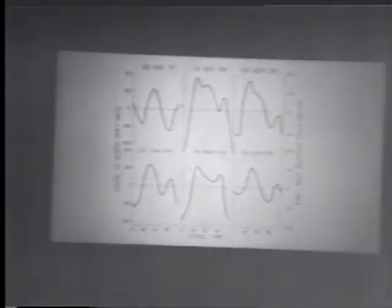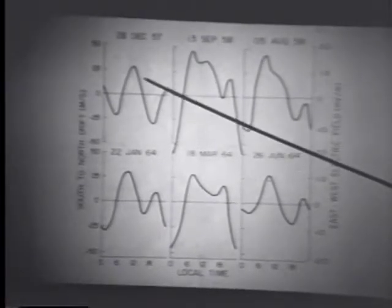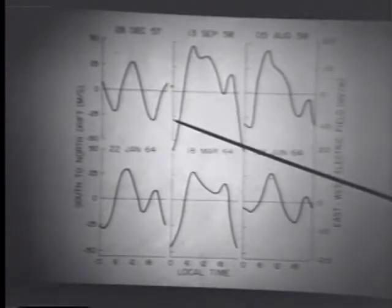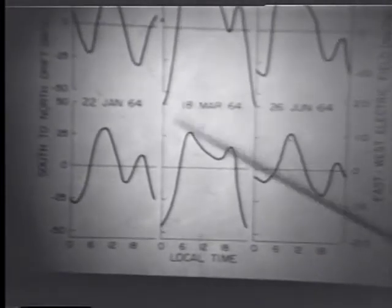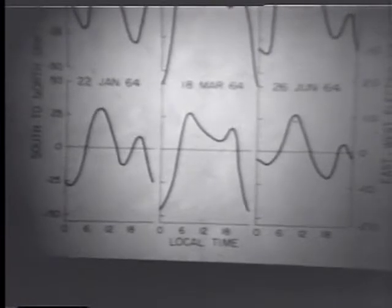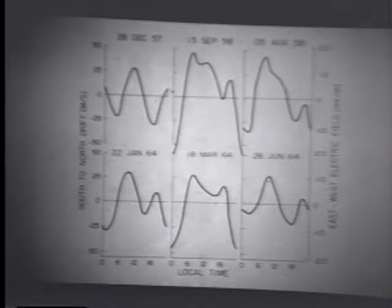Similar results are shown for Arecibo latitude. The east-west electric field or drift reverses direction around about 14 hours local time, a feature which has been noted at Arecibo quite often by Harper and others. This is essentially a result of the semi-diurnal component of the wind — there is no necessity to invoke plasmaspheric electric fields as was done in the interpretation of the wind data. However, there are features of Arecibo observations which are not reproduced here, specifically the large enhancement at 4 o'clock in the morning, which the authors say is due to an 8-hour component of the wind.